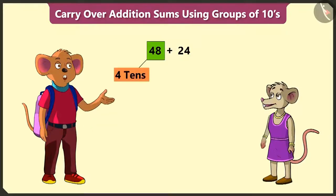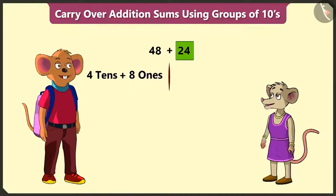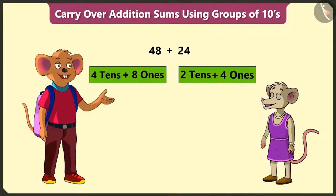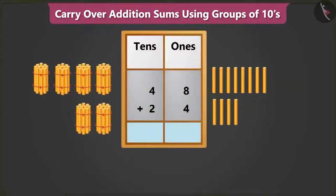How do we do that? 48, that is 4 tens and 8 ones. Similarly, 24 means 2 tens and 4 ones. Now, to add both these numbers, we have to place them in the tens and ones boxes.